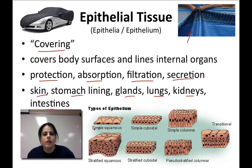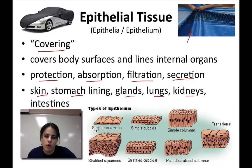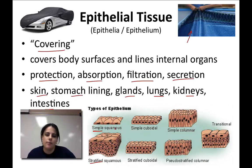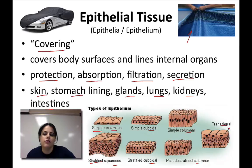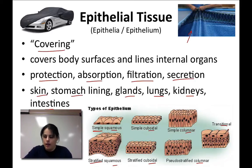As a side note, epithelial tissue is classified based on how many layers it's made of and the shape of the cells. If it's only one layer of cells thick, we call it simple. If it is more than one layer, we call it stratified, because a strata is a layer. Then we name it based on the shape of the cell: if it's a flat cell, it's squamous; if it's a cube shape, it's cuboidal; and if it's a column shape or tall and skinny rectangular shape, it's columnar. There's also transitional, which combines all three shapes because it transitions from one shape to the next. These are the types of epithelial tissues that make up your body.